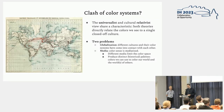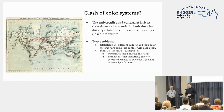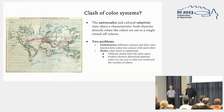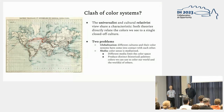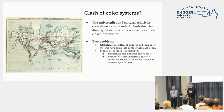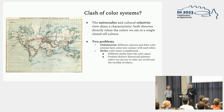Melvin and I thought that these universalist and cultural relativist views share a very common characteristic — namely that both theories relate the colors that we see to a very single and closed-off culture. For us as historians, this runs into two problems. We first have a very big historical question, that of globalization — different cultures and their color systems have come into very heavy contact with each other over the last couple of centuries. Secondly, color has also become mediatized in the last two centuries. Different media, such as painting or photography, limit the color space differently, producing distinct historical palettes.